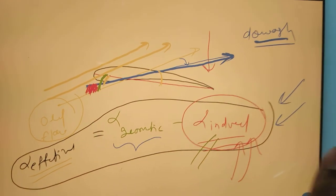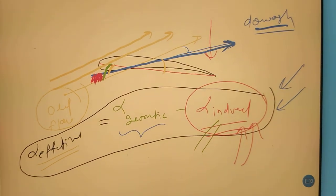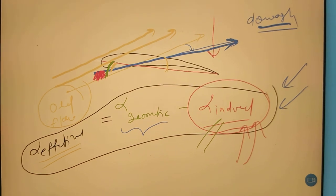Alpha induced is the angle between yellow and blue? Correct, you are right - chord line and the blue line. Yes, yes, yes, right, very good.